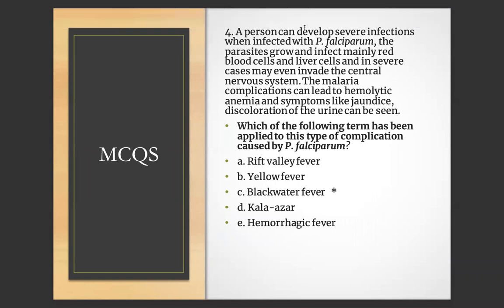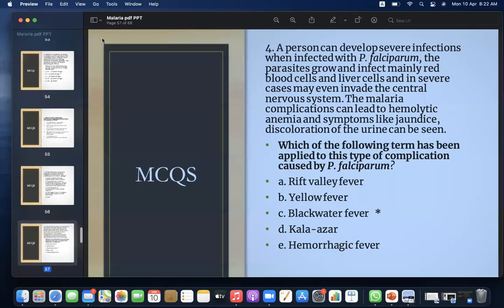MCQ 4: When infected with P. falciparum, the parasites grow and infect mainly red blood cells and liver cells, and in severe cases may invade the central nervous system. Malaria complications can lead to hemolytic anemia, and symptoms like jaundice and discoloration of the urine. Which term has been applied to this type of complication caused by P. falciparum? A) Brief belly fever, B) Yellow fever, C) Black water fever, D) Kala-azar, E) Hemorrhagic fever. Answer: C — black water fever.